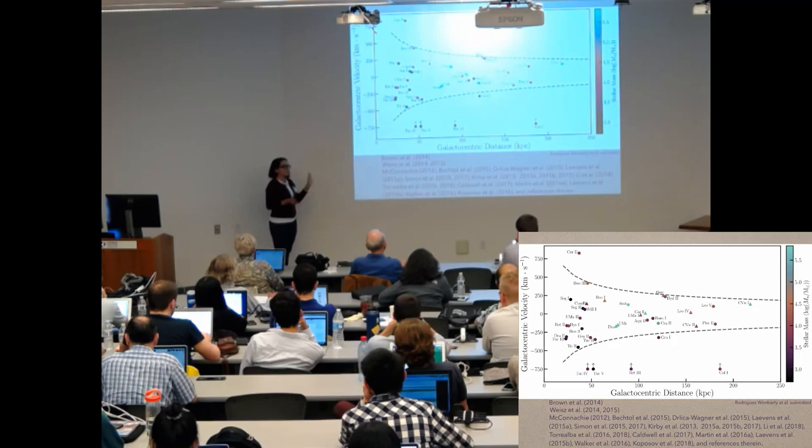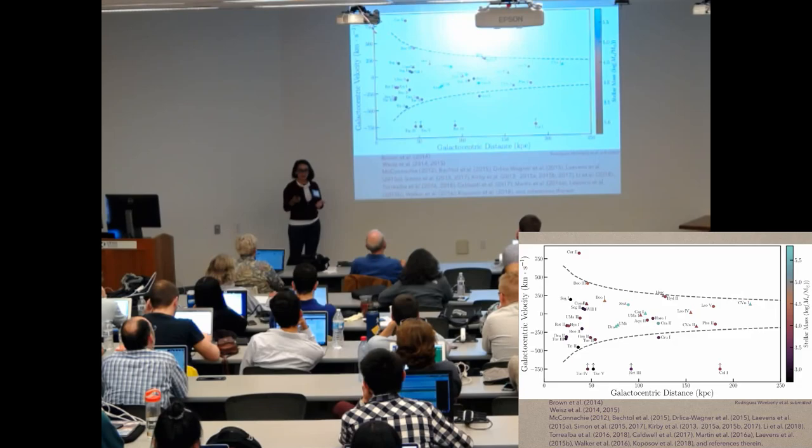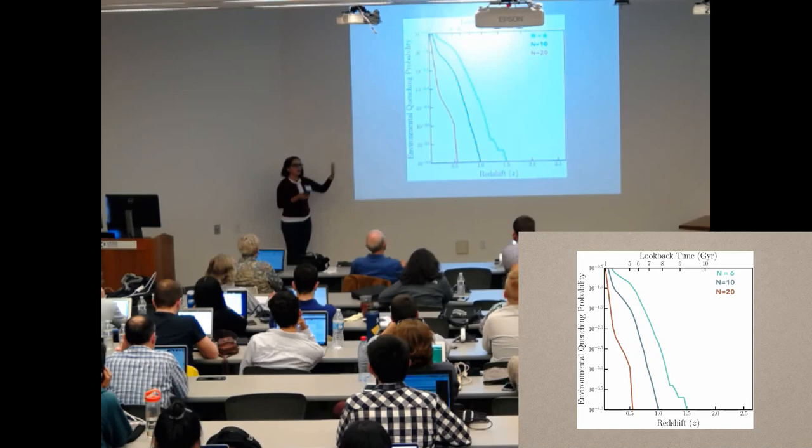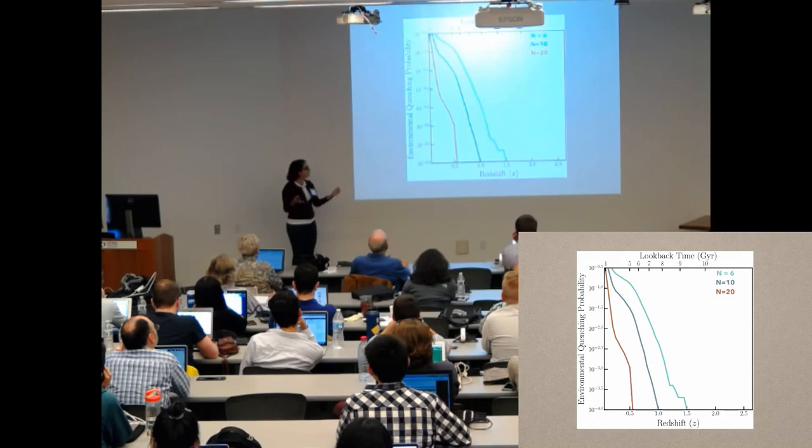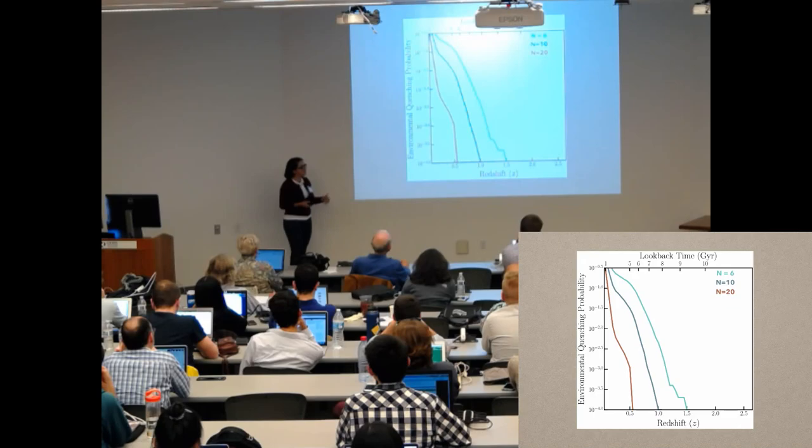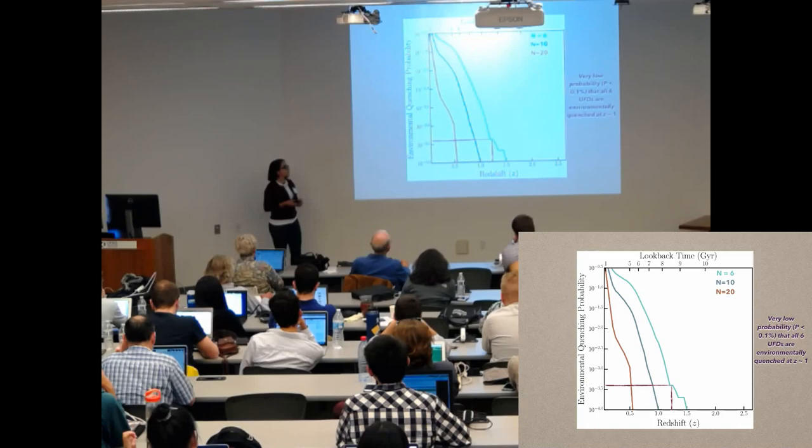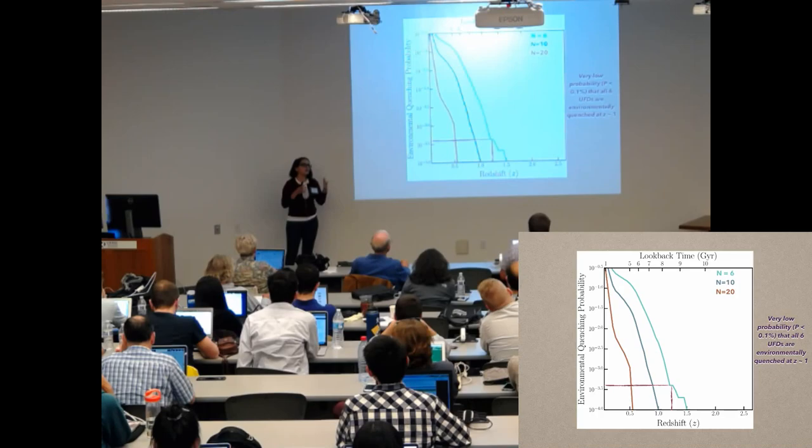I'm going to take this now more robust observational information and add it to the games that I was playing. Instead of just looking for six randomly selected halos, I push it out and look for 10 and then 20. And as you can see, every time our population of pretty ancient ultrafaint dwarf galaxies grows, so does the increasingly vanishingly small probability that the environment could have quenched their star formation. But going with the conservative route, we can say that there is a less than 0.1% chance that environment quenched our ultrafaint dwarf galaxies.